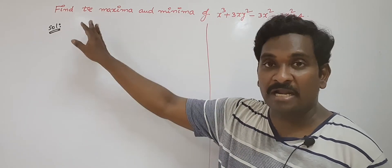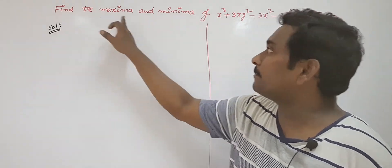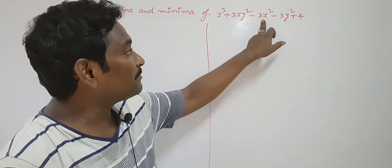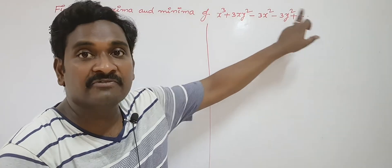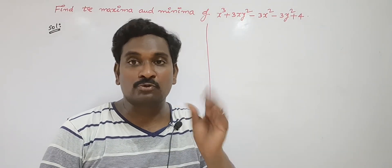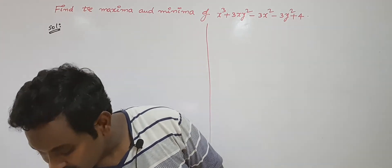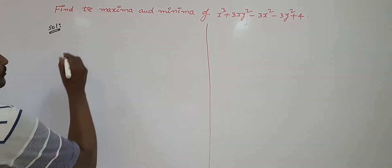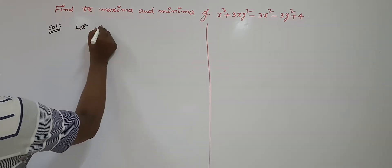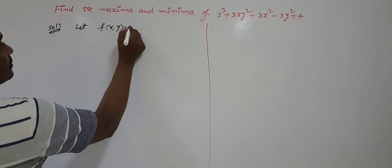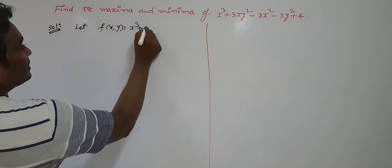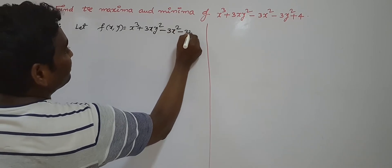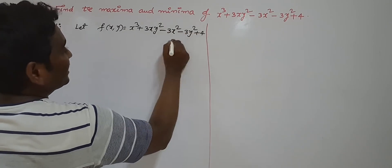Hi everyone. See the next example on maxima and minima. Find the maxima and minima of the function x³ + 3xy² - 3x² - 3y² + 4. Clearly this function has two variables, so first of all give it the name f(x, y). Let f(x, y) = x³ + 3xy² - 3x² - 3y² + 4. Take it as equation number 1.